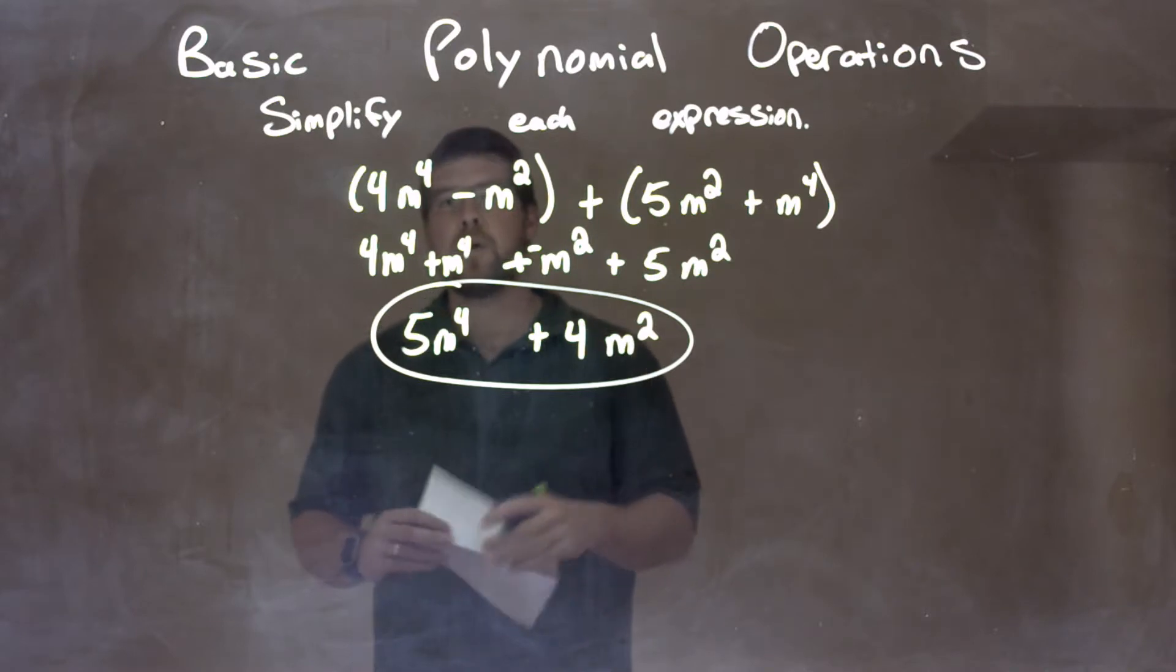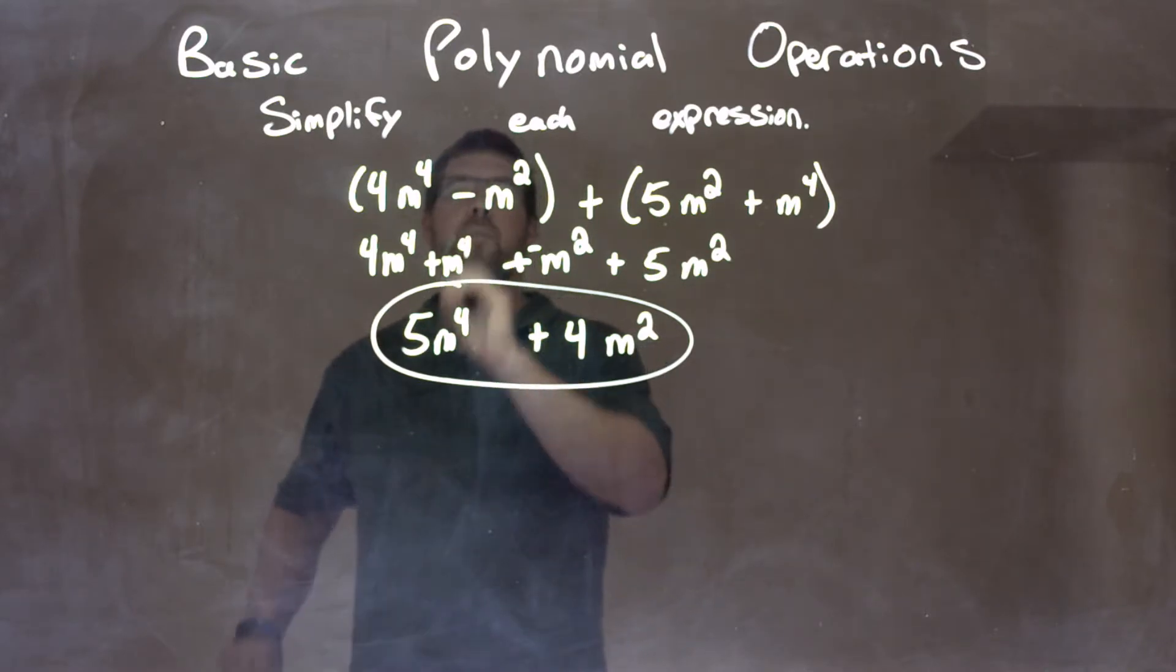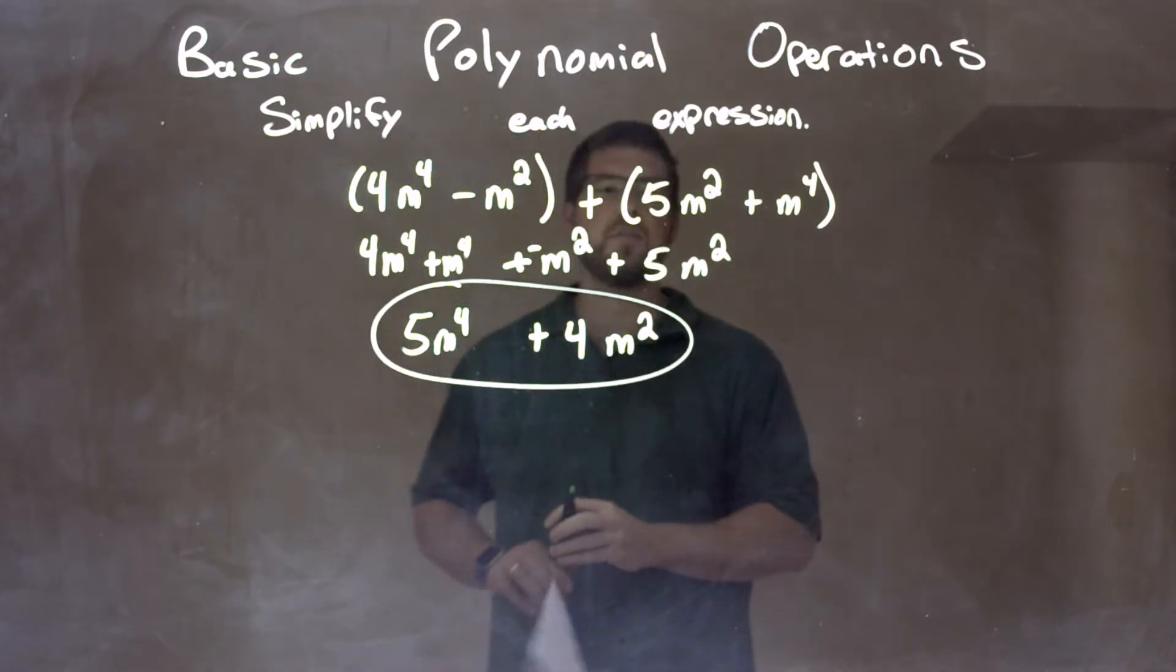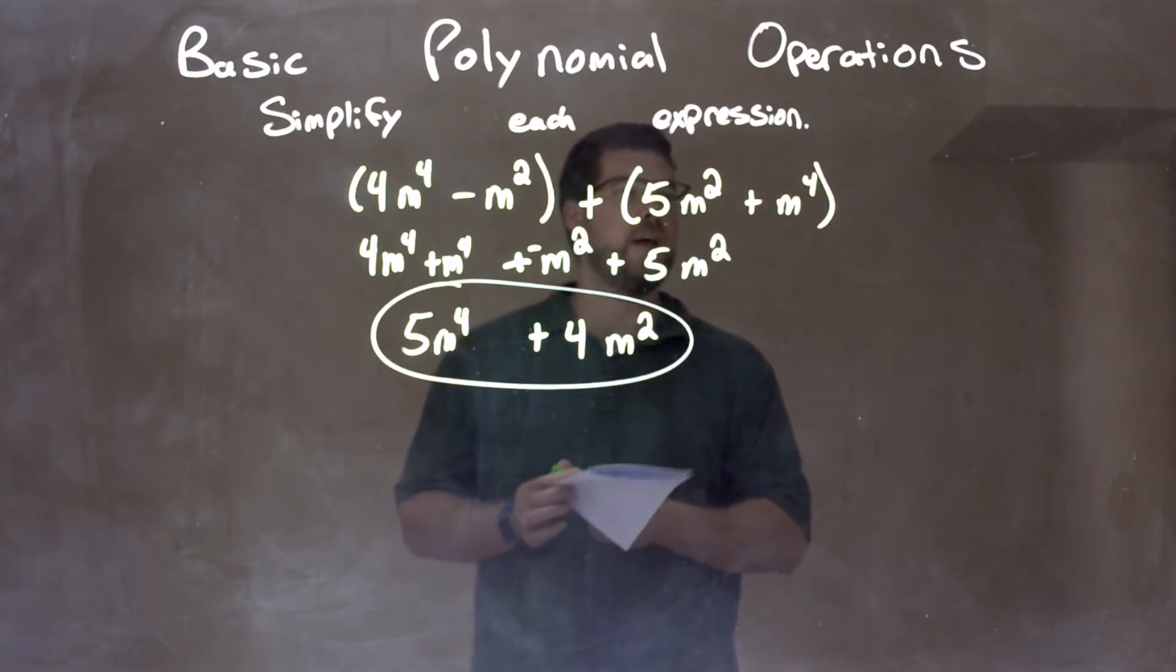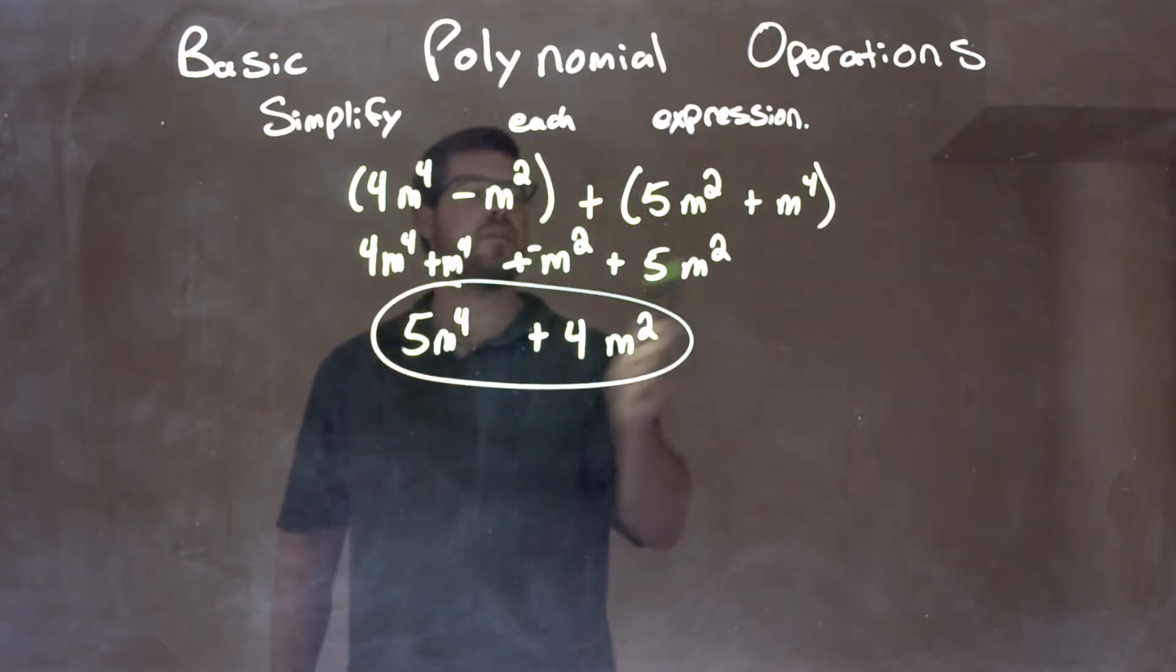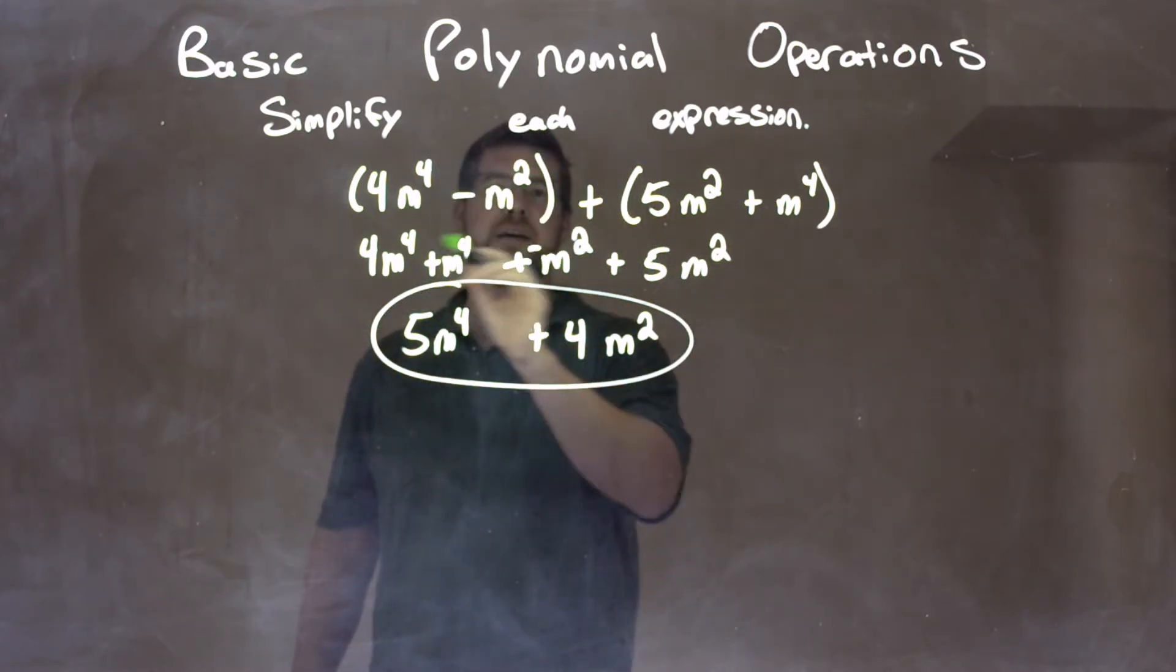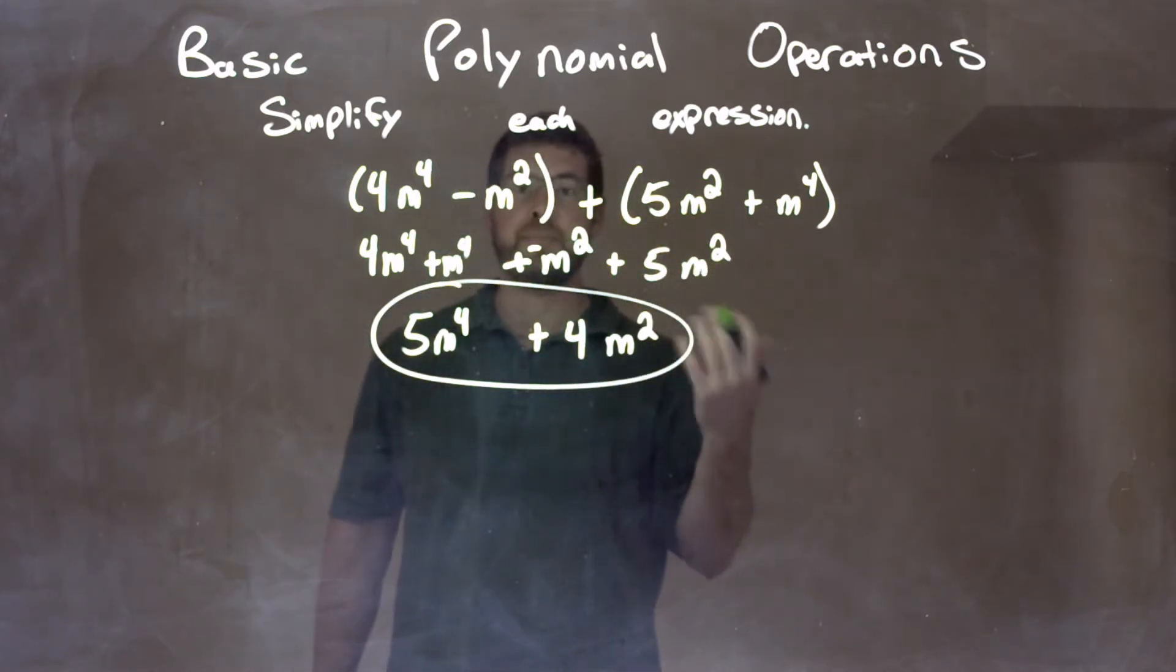Let's recap. We're given 4m to the 4th minus m squared plus 5m squared plus m to the 4th. This part's in parentheses, and so is this part in parentheses. Then I rearranged. First I checked inside each parenthesis if I could simplify. I could not.